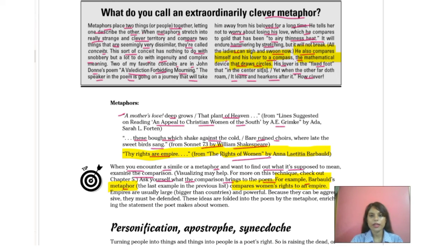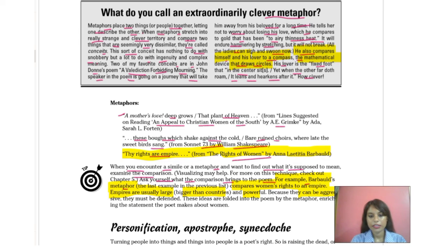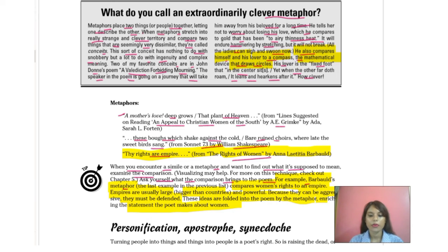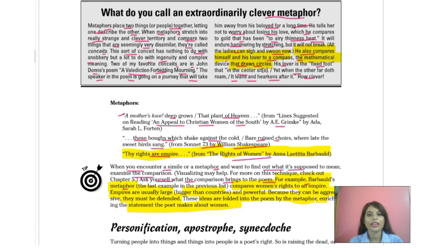Empires are usually large — bigger than countries — and very powerful. Because they can be aggressive, they must be defended. So these ideas are folded into the poem by the metaphor, enriching the statement the poet makes about women. Just like empires are larger and more powerful than countries, women's rights would provide women with much more power and a much more defensible position. Comparing empires with the rights of women means that just like empires, women will also stand in a strong, defensive position if they are given their proper rights.